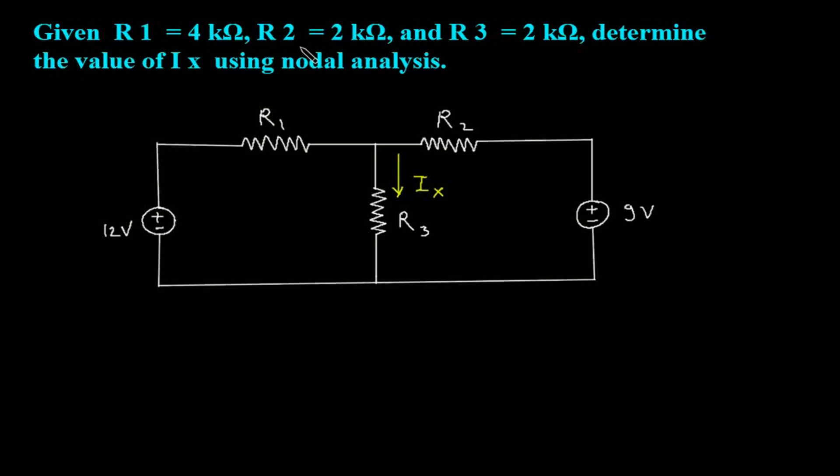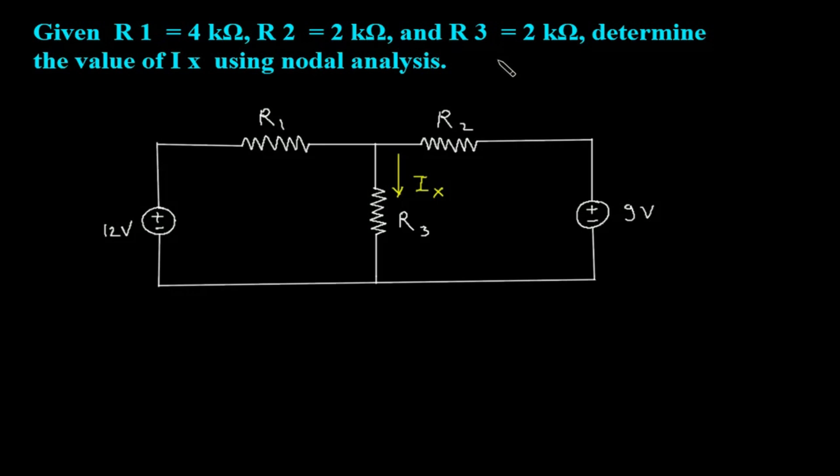Given R1 is equal to 4 kΩ, R2 is equal to 2 kΩ, and R3 is equal to 2 kΩ. Determine the value of Ix using nodal analysis.